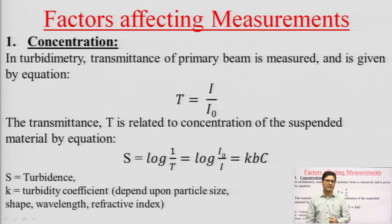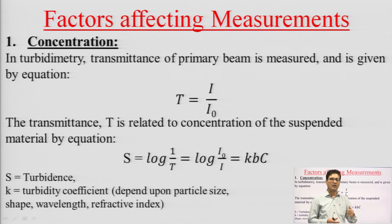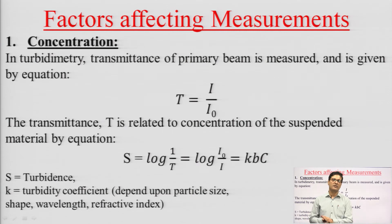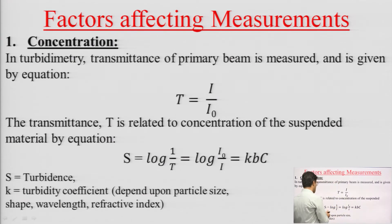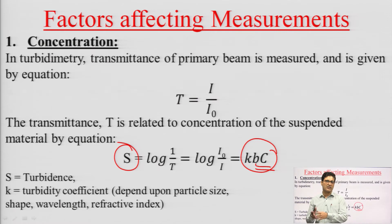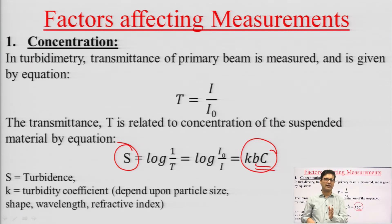Now, the factors affecting the measurements. The first is concentration. Just as in Beer's Law, absorption is proportional to concentration. Here also, in nephelometry we observe scattering and in turbidimetry we measure turbidance. Turbidance is proportional to concentration — higher concentration means greater light loss, causing greater decrease in the transmitted beam intensity. Turbidance is thus correlated with concentration.